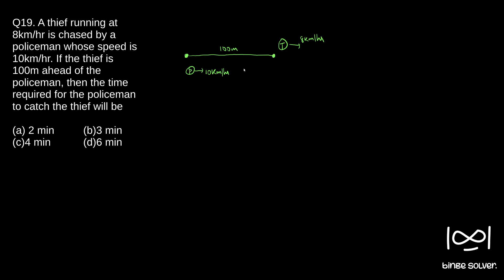There are two methods to solve this question. The first is the normal method. Say the policeman catches the thief at time t — they both reach the same point. The time taken is t, so the total distance the thief ran is 8 times t.